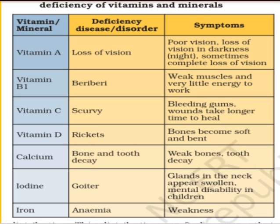To avoid these deficiency diseases, we need to eat a proper diet rich in vitamins, minerals, and proteins. If you are a growing child, your diet should be a balanced diet without any deficiency.